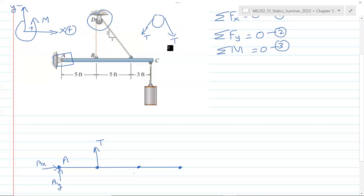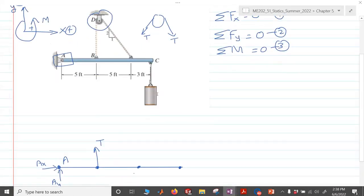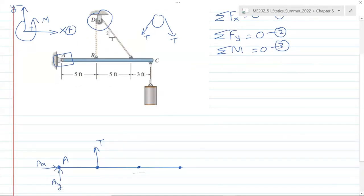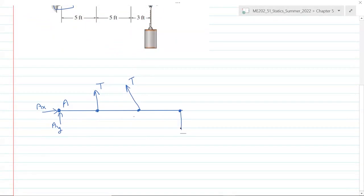So if this is T, then this tension is also T, which is tension in this cable here. And the last one that we need to draw in our free body diagram is the weight of cylinder at C, Wc, that is 80 pounds. We can also add the distances here: this distance is 5 feet, this distance is 5 feet, and this distance is 3 feet.